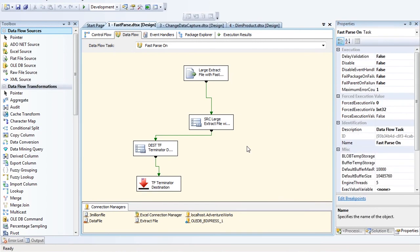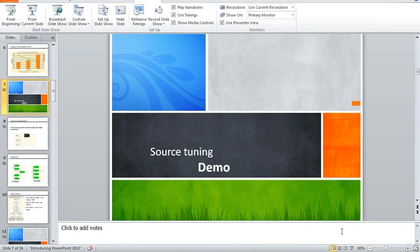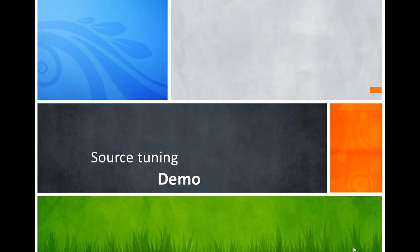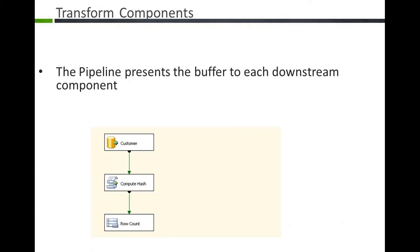So we talked about the fast parse property and the network packet size property. The next piece is how buffers work inside SSIS. We fill up 10 meg buffers by default and send them downstream. This is called a synchronous component — as I read data out, I send it to the next component, like a bucket brigade.